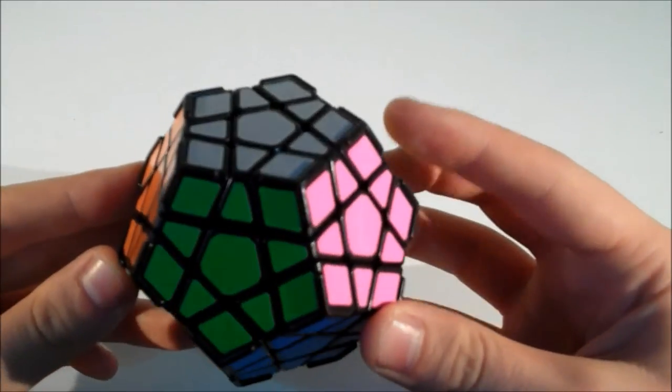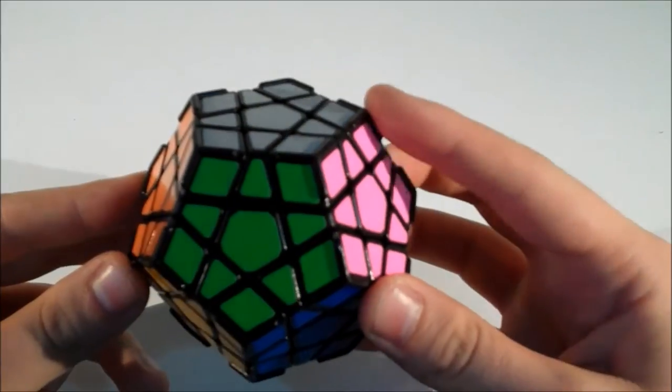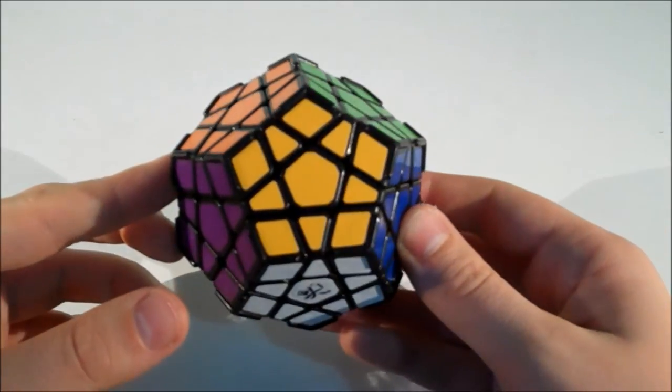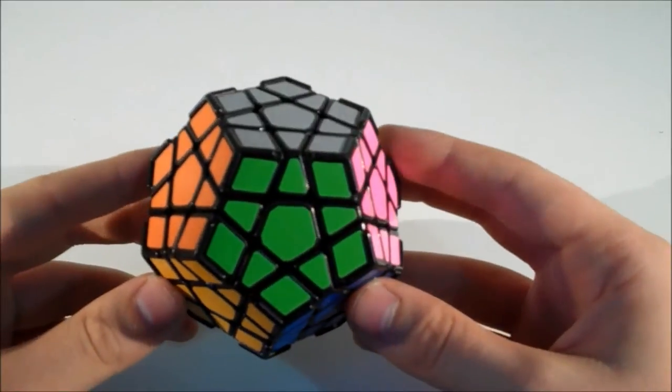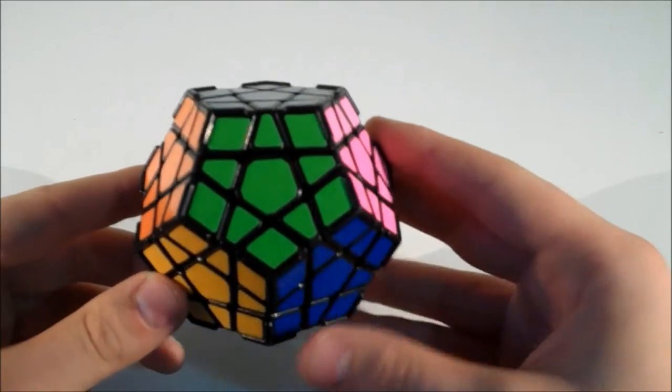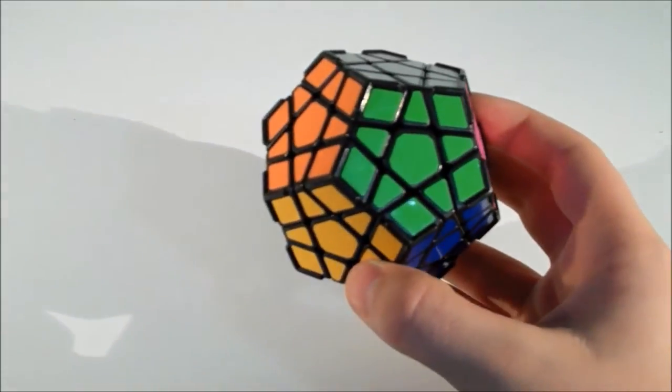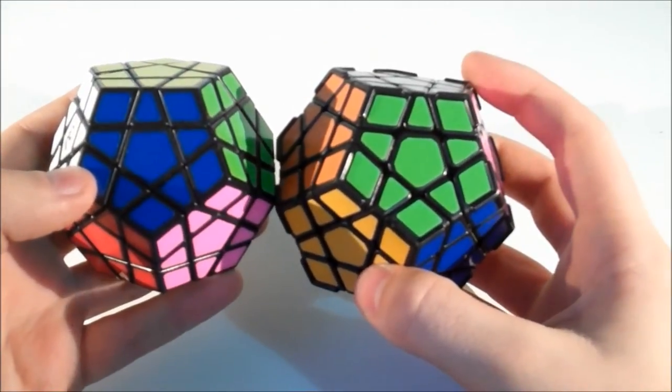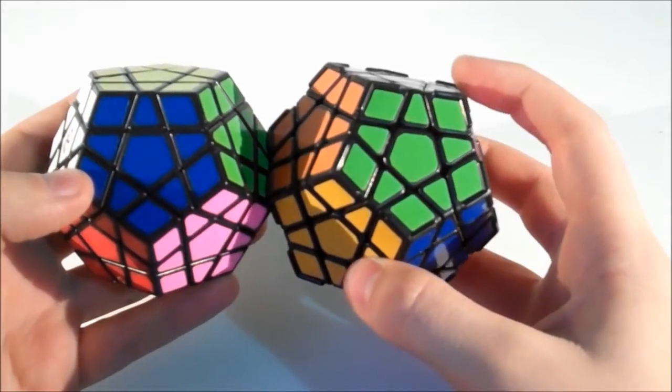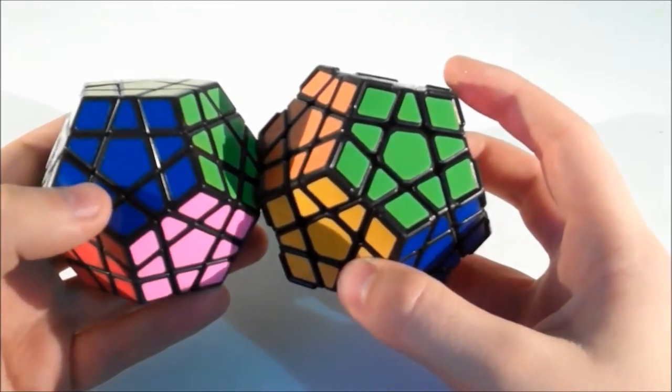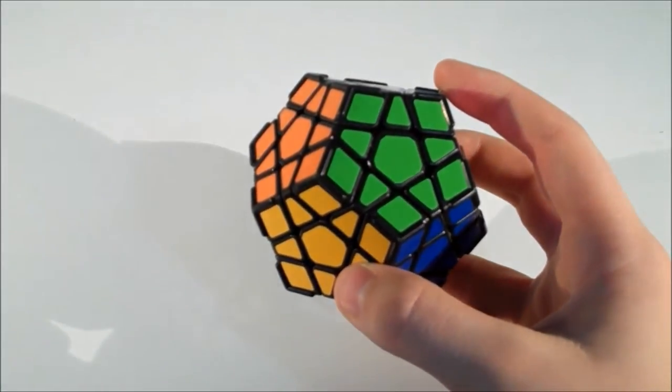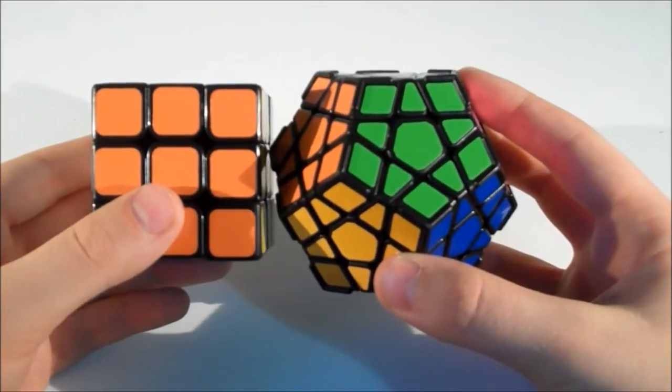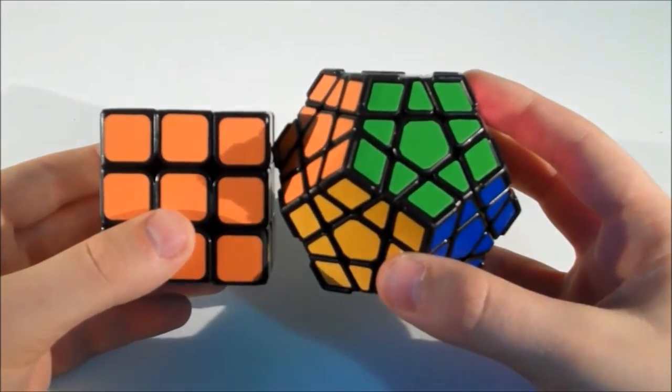As you can see, this is the version with the ridges on it, and because this puzzle is by Dian, I think it's designed to be a speed cube and that's exactly what it is. The size of this puzzle is exactly the same as a normal Megaminx, apart from the ridges which stick up a little bit higher. Compared to a regular 3x3, as you can see, the Megaminx is quite a bit bigger.